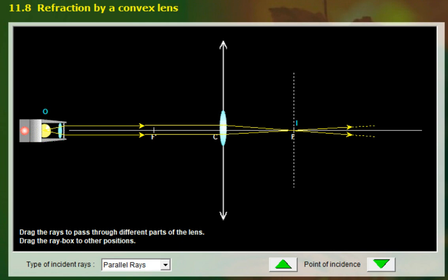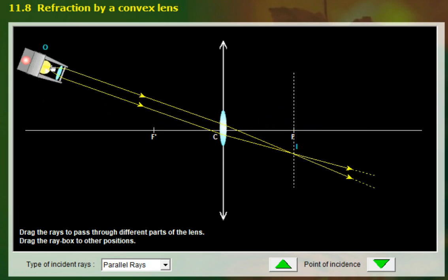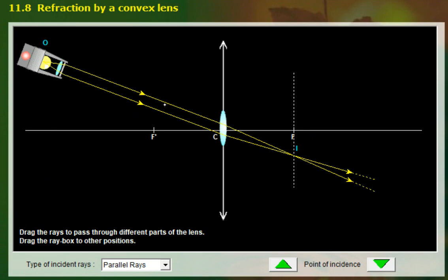But what if the parallel beam of light is at an angle? If the parallel beam of light hits the lens at an angle, it will still converge to a point over here and is along this dotted line here.